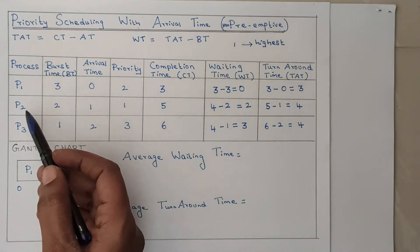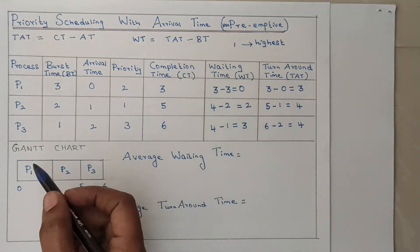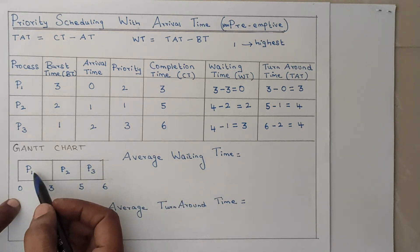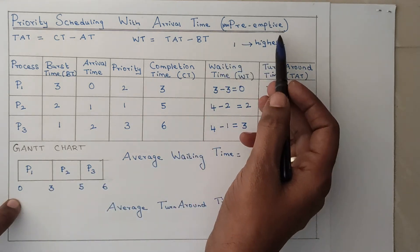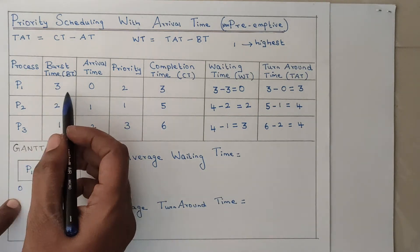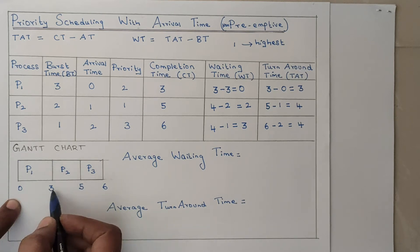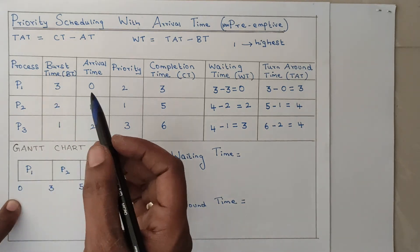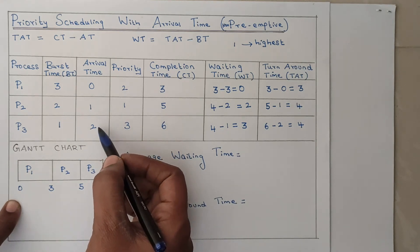Process P2 has the highest priority, but we must consider arrival time — so the Gantt chart is slightly changed. At 0ms, process P1 arrives. Since it is non-preemptive, it will execute until its burst time completes. The burst time of P1 is 3ms, so from 0 to 3ms, P1 gets executed. Within those 3ms, all other processes also arrive — P2 and P3 have both arrived.